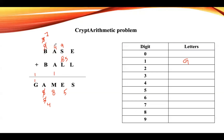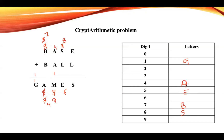Let us move to the previous step. Instead of taking without carry, add these two values with carry: 4 plus 4 is 8, plus 1 carry is 9. So instead of taking M as 8, let us take it as 9. Now let us assign all values clearly: G is 1, B is 7, A is 4, S is 8, M is 9.